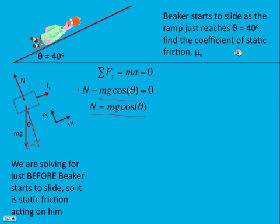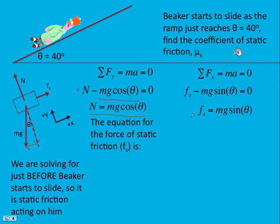We actually need four equations here. The other equation we need is sum of the forces in the x equals ma, and that equals zero. Again, we're solving for just before he goes, so there's no acceleration. And the force of static friction is all in the positive x. And then the other component of the weight, opposite angle theta, is down the ramp, and I made that negative x, so it's a negative force. And so we get force of static friction is mg sine theta.